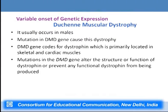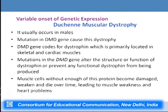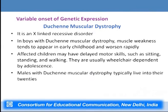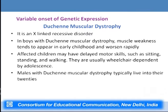Duchenne muscular dystrophy occurs prevalently in males due to mutation in the DMD gene. The mutation alters the structure and function of the dystrophin protein, preventing it from functioning correctly, which leads to muscle cell breakdown, muscle weakness, and heart problems. It is an X-linked recessive disorder in which children have delayed motor skills, and affected males typically live into their 20s.